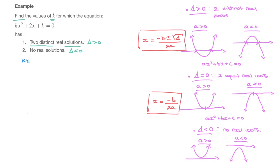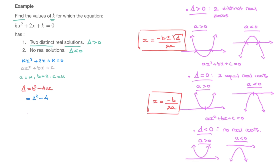We have kx squared plus 2x plus k equals zero. Comparing to ax squared plus bx plus c, we identify: a equals k, b equals 2, and c equals k. Using delta equals b squared minus 4ac and substituting, delta equals 2 squared minus 4 times k times k, which becomes 4 minus 4k squared. That's this quadratic equation's value for delta.